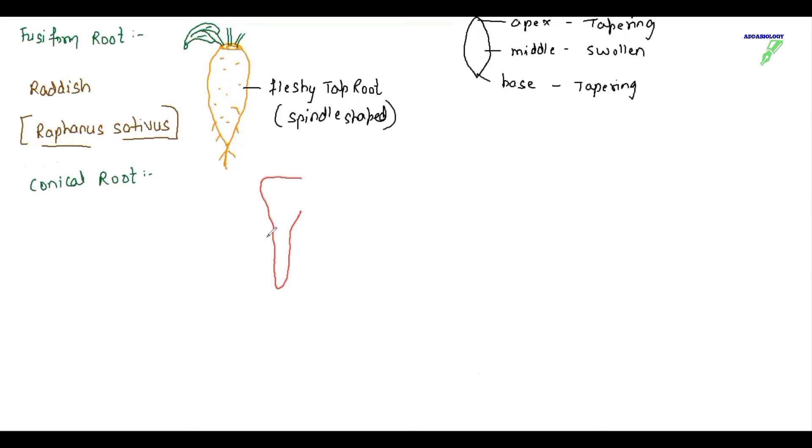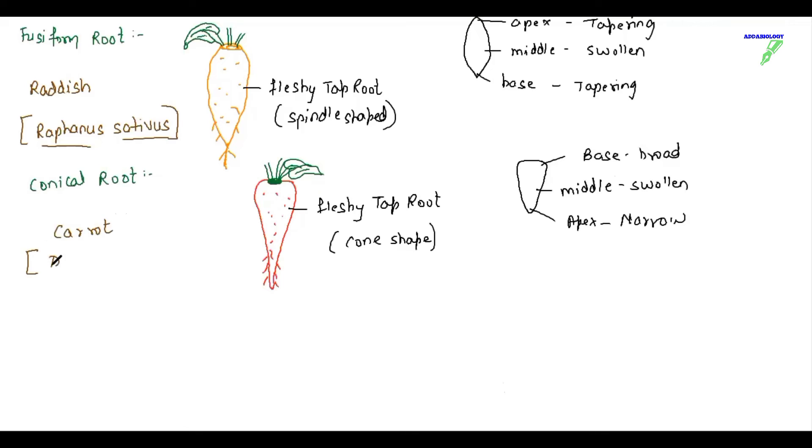Conical root, as the name suggests, it will be cone-shaped. So here the example that we have is carrot. This disc-like structure that you can see, green one, is the stem. So stem in root of radish or carrot is very small, reduced, disc-shaped. Here the base is broad and the apex is narrow. The scientific name for conical root carrot is Daucus carota.